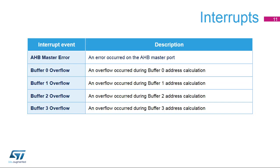The CHROM GRC manages five interrupt sources: AHB master error, when an error occurs during an AHB transaction to the physical memory, and four buffer overflows, one per buffer, when an overflow occurs during the offset calculation of a buffer.